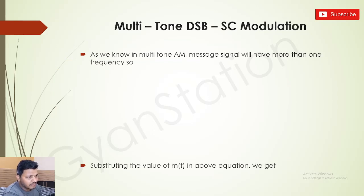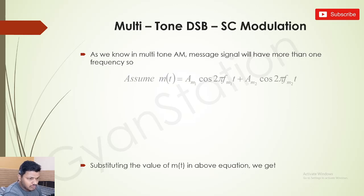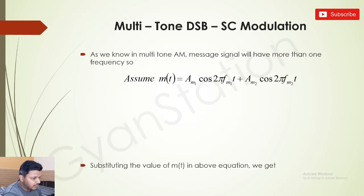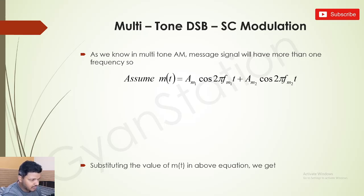As we know in multi-tone amplitude modulated signal, the message signal will have more than one frequency. So we will assume m(t) = Am1·cos(2π·fm1·t) + Am2·cos(2π·fm2·t). Here fm1 and fm2 are the two frequencies of our message signal, and we will assume that fm2 is greater than fm1.